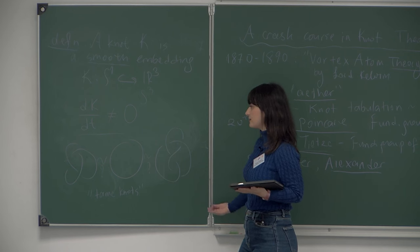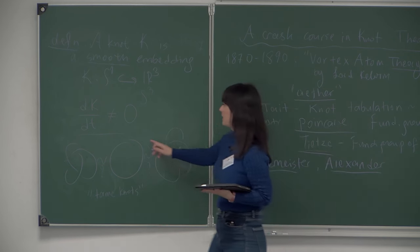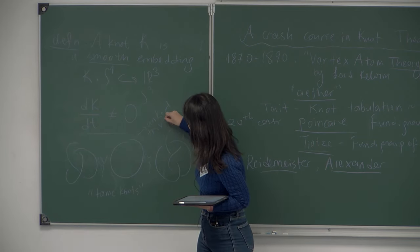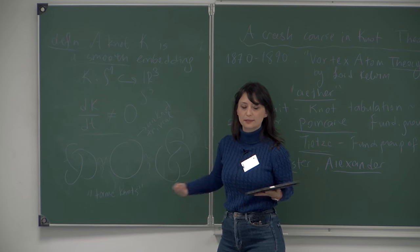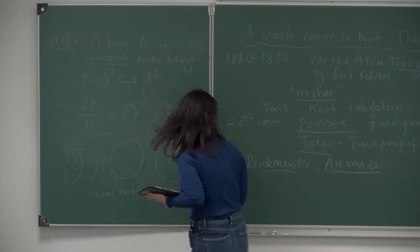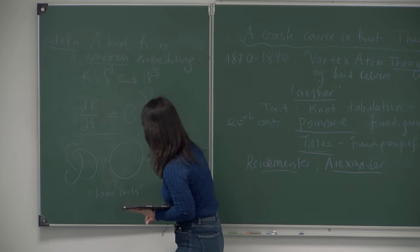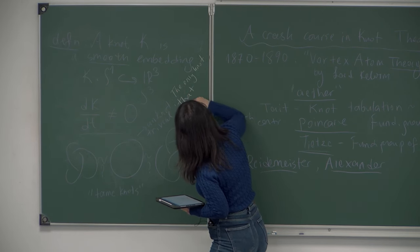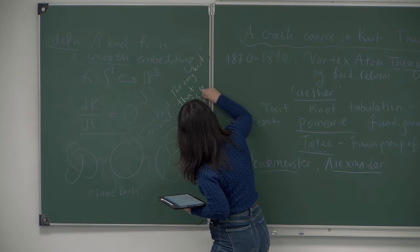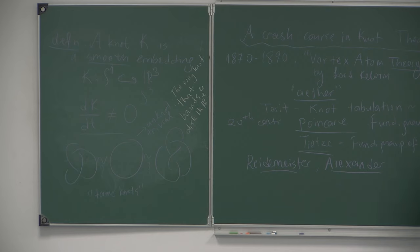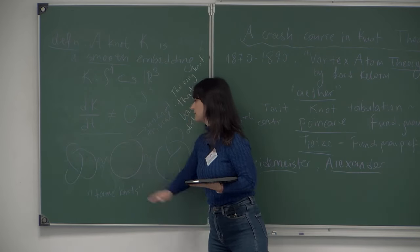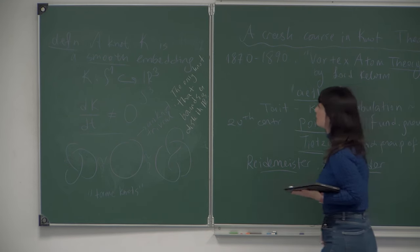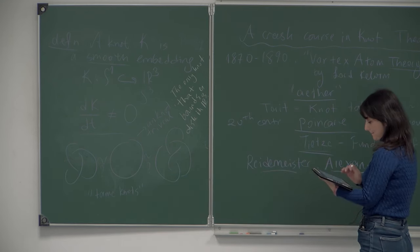The main problem of knot theory is to distinguish given knots from each other and to make a knot classification. The unknot, also called the trivial knot, is the only knot that bounds a disk in three-dimensional space. We can also define it as the knot that, when restricted to a plane, has no self-intersections. There are various equivalent definitions for the unknot.